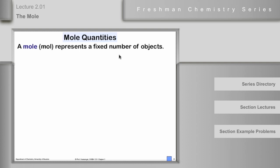Chemical compounds are made up of atoms. Atoms are exceedingly small. In order to get any workable, familiar quantity of substances, we need to have a very large number in our basic unit.